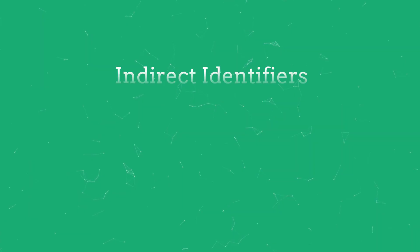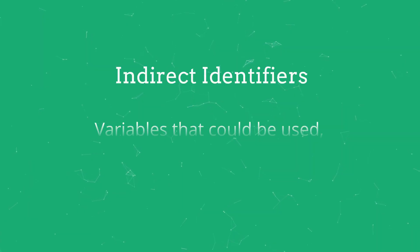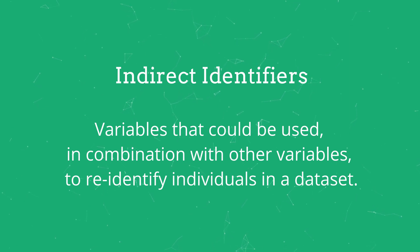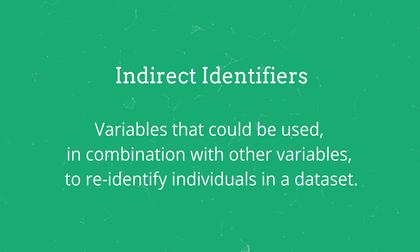The selection of key variables is arguably the most important step in the disclosure risk assessment process. To do this right, we need to understand what key variables are and how they can lead to disclosure. Indirect or quasi-identifiers are variables that could be used in combination with other variables to re-identify individuals in a dataset. Depending on the context, almost any variable could be an indirect identifier.